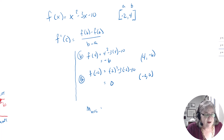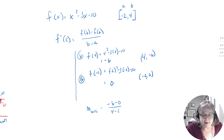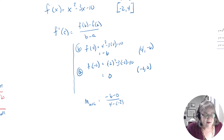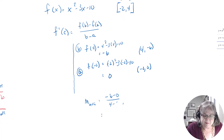So what I have is the point (4, -6) and (-2, 0). Calculating the average slope: b minus f of a over b minus a gives us negative 6 minus 0 over 4 minus negative 2, which is negative 6 over 6, which is negative 1.